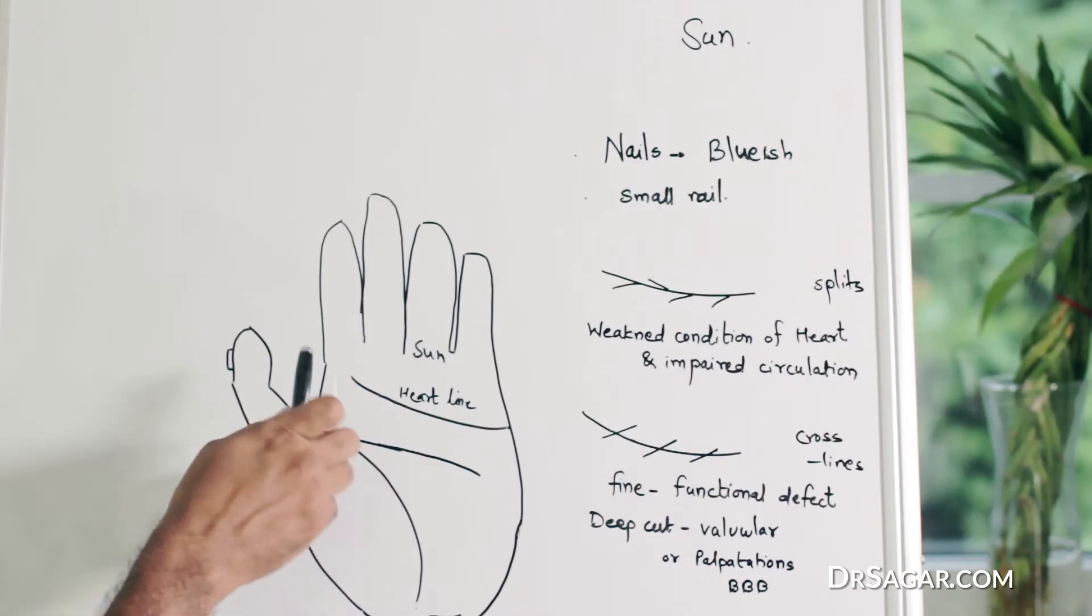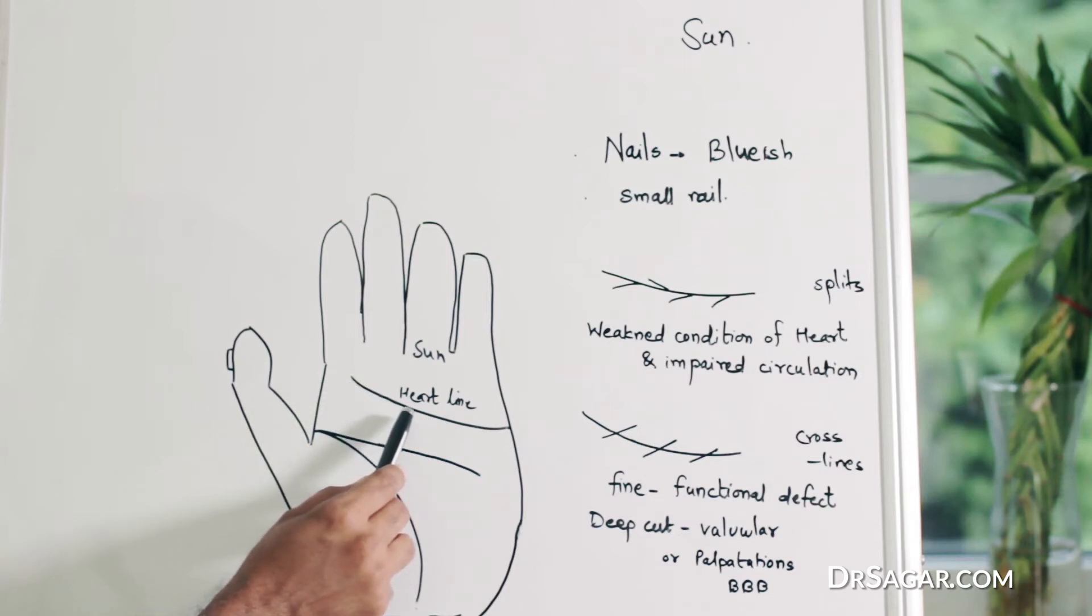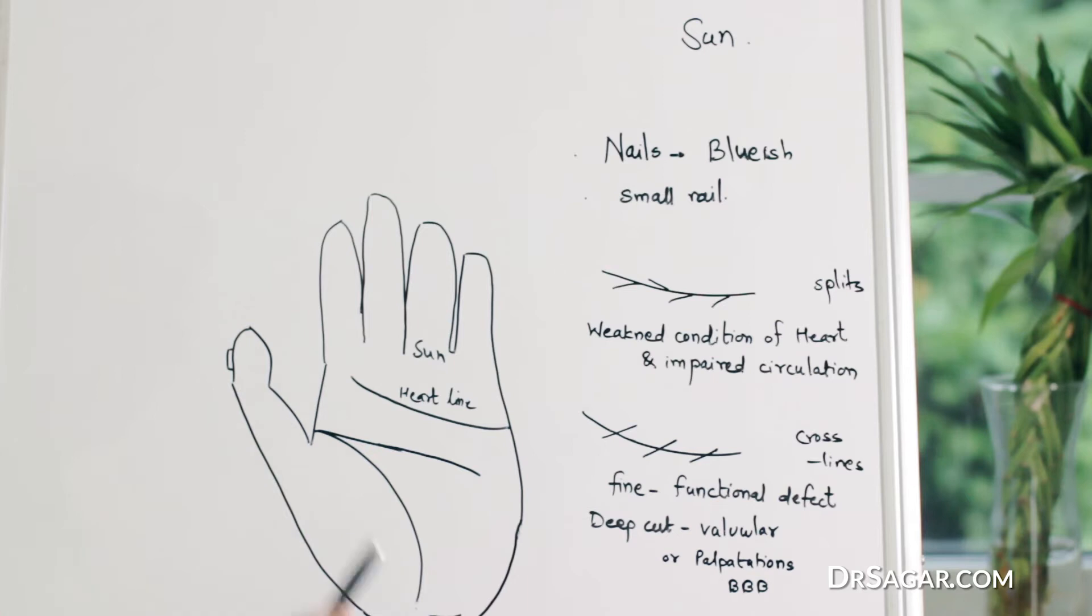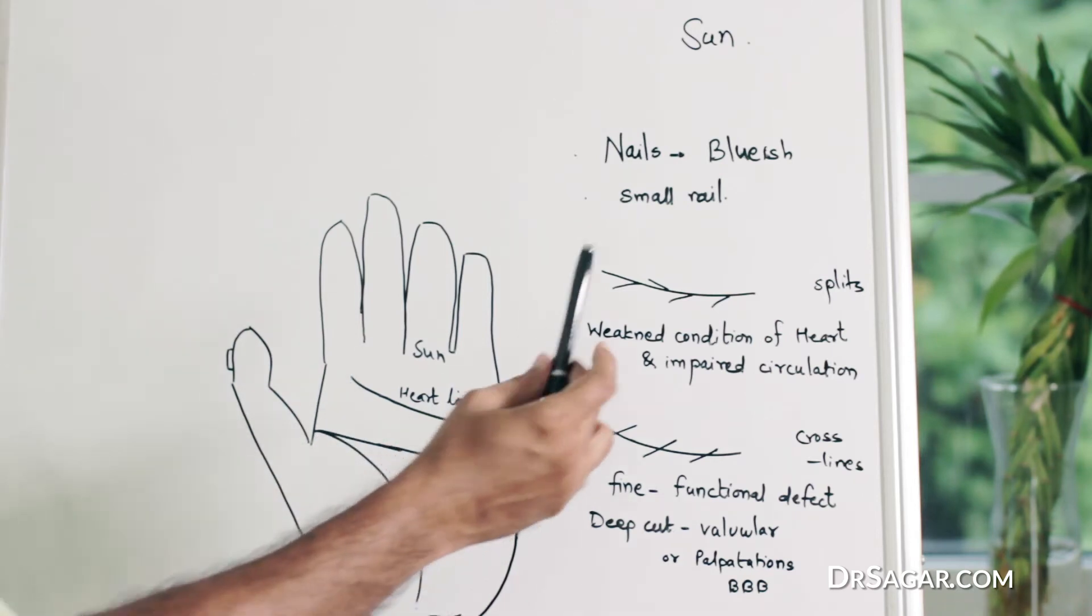If the heart line in this diagram is clear, distinct, faultless, then the function of the heart will be okay according to the age of that person. Now, what are the defects in this normal heart line? See...